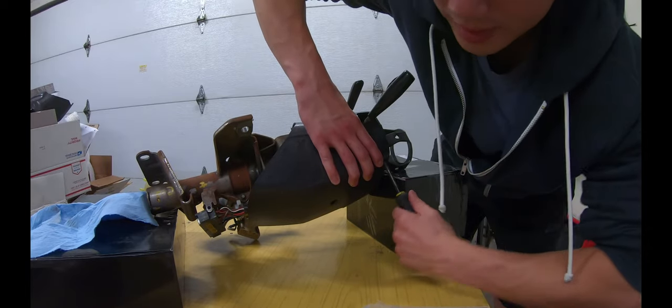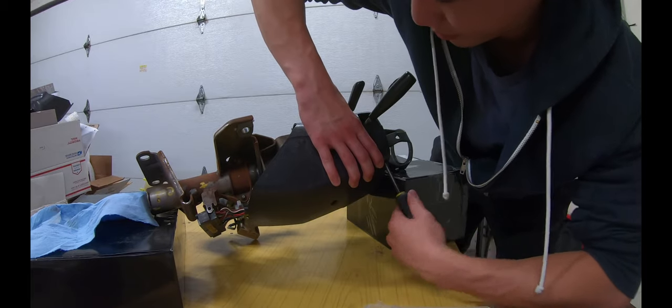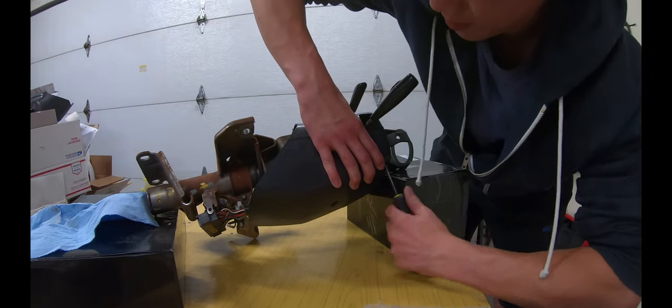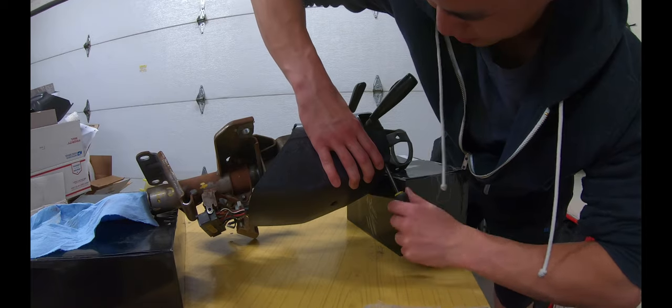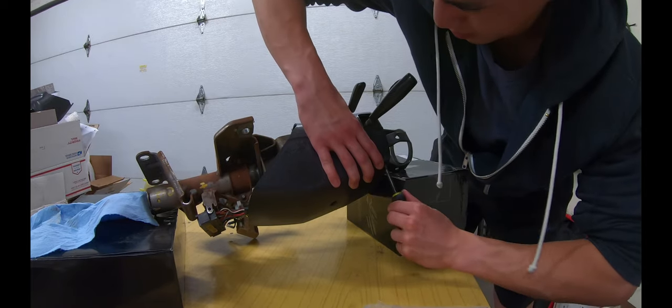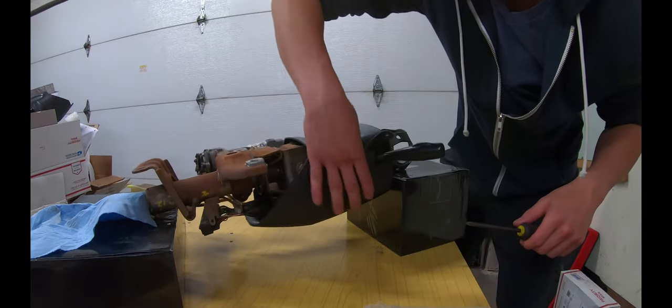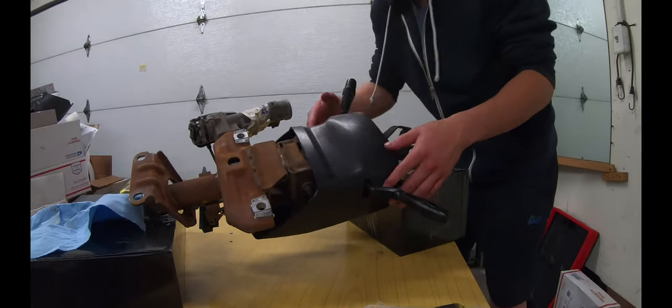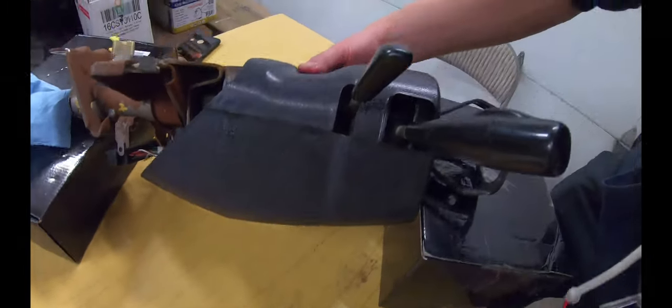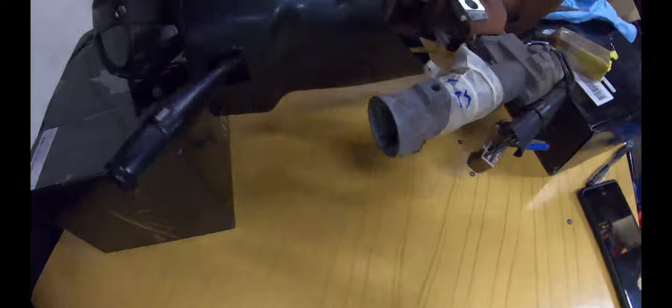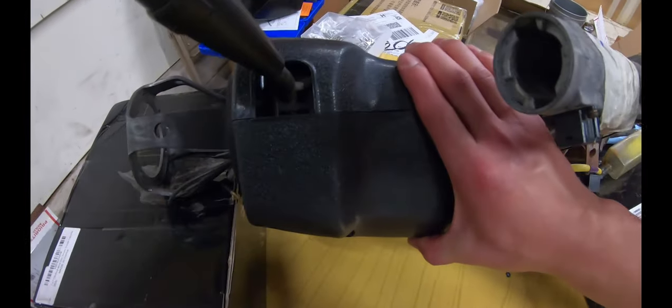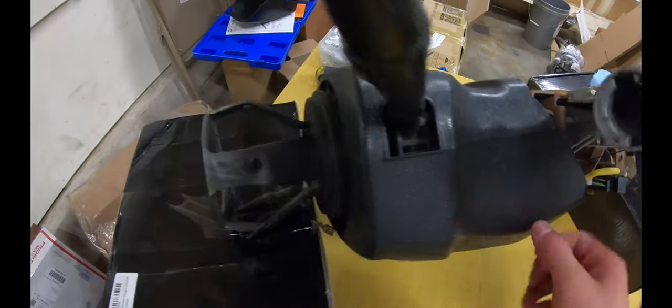Again, you don't want to over-tighten this. When you feel a big step in resistance, you know that it's tightened. That's about it. So there we go. So you can see this side is flush. You can also see that this side is pretty flush. There you go. Snapped it in place. All the clips are in place.